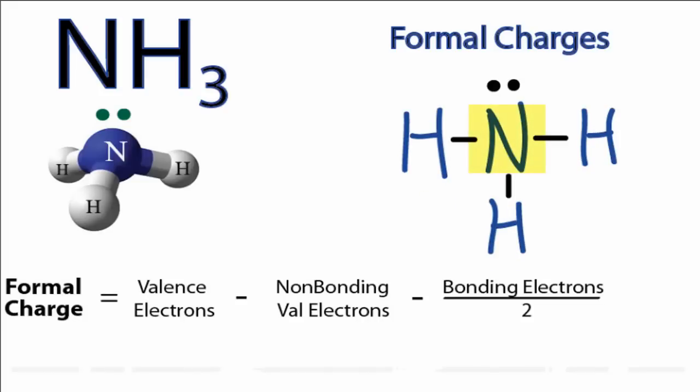So let's start with the nitrogen. Looking at the periodic table, nitrogen is in group 5 or 15, it has 5 valence electrons. We'll subtract the non-bonding valence electrons, and we have 2 non-bonding valence electrons right there.